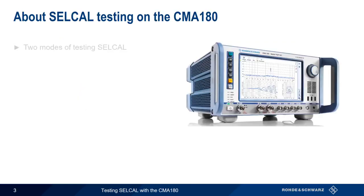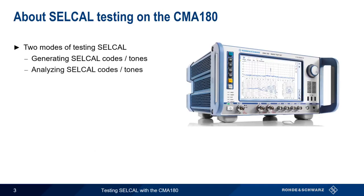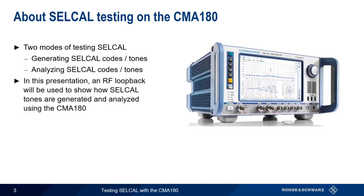On the CMA 180, there are two modes of testing cell call. The CMA 180 can generate cell call codes, or tones, and it can also analyze cell call codes, or tones. In this presentation, a simple RF loopback will be used to demonstrate both cell call generation and analysis using the CMA 180.